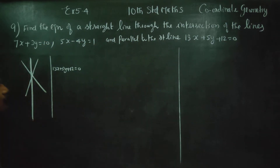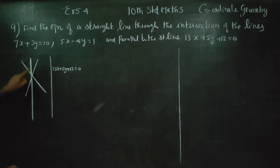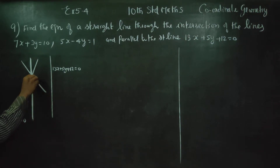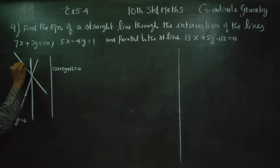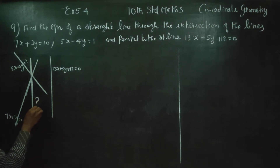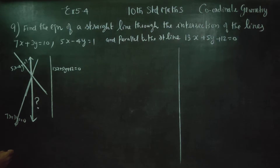Find the equation of the straight line through the intersection of the lines. The two given straight lines are: first straight line is 7x plus 3y is equal to 10, and the second straight line is 5x minus 4y is equal to 1. We find where they cut — that is the point of intersection.